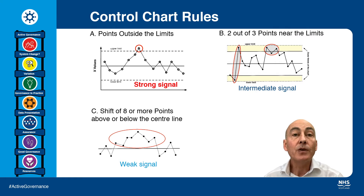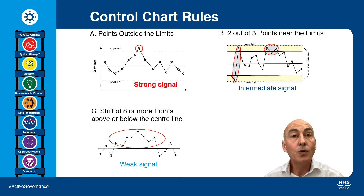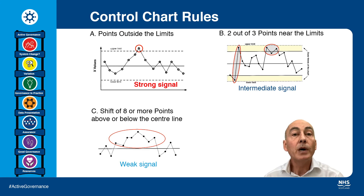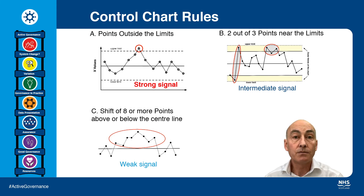Probably the most famous of these additional rules are the Western Electric Zone tests, but you may come across many of these additional rules and you've got to stop and think before you actually apply them. If you were part of a quality improvement team and desperate to see even the smallest hint of an improvement, you might want lots of sensitive rules. But as a member of the board performing a governance role, you really only want to react to strong signals. So I would recommend that you stick to Rule 1: Points Outside the Limits.